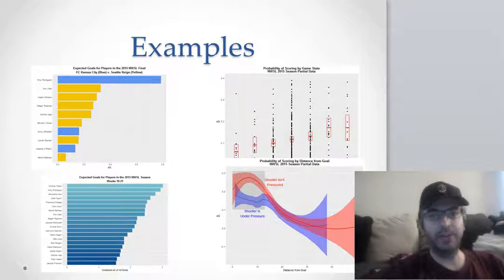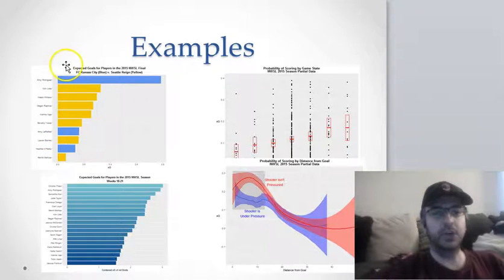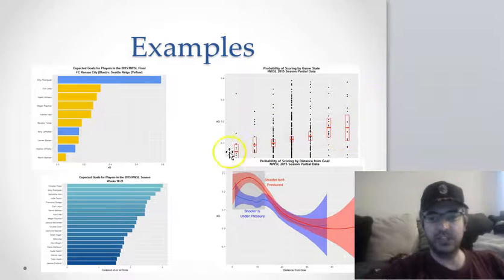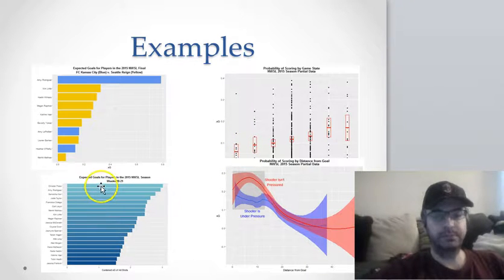These are some things I've posted. Here's expected goals for the 2015 final. Here's probability of scoring by game state - as you can see, if you're winning you take better xG shots, if you're losing you take lower xG shots.